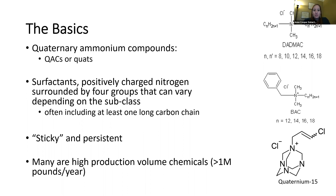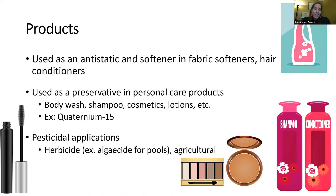Many of these compounds are high production volume chemicals — over 1 million pounds per year — and that amount is certainly going to go up this year. In terms of products, some are used as antistatics and softeners in fabric softeners and hair conditioners. Some are used as preservatives in personal care products like body wash, shampoo, cosmetics, and lotions. An example is quaternium-15, which acts as a preservative by being a formaldehyde releaser, releasing formaldehyde into the product.